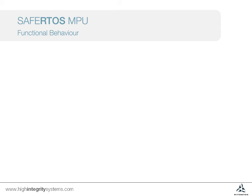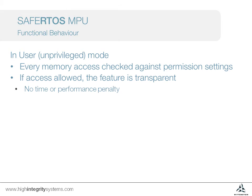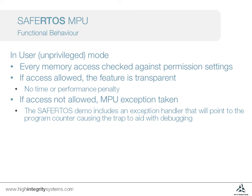Here's a quick reminder of the behavior for user mode code, or unprivileged mode. Every access is checked against permission settings. This can include read, write, and execute permissions being set individually. If an access is permitted, the feature is transparent and has no impact on the performance of the device. If access is not permitted, the MPU exception is taken. The demo code shipped with SafeRTOS includes an example exception handler that identifies the program counter location that caused the exception, which is very helpful when trying to debug MPU issues.